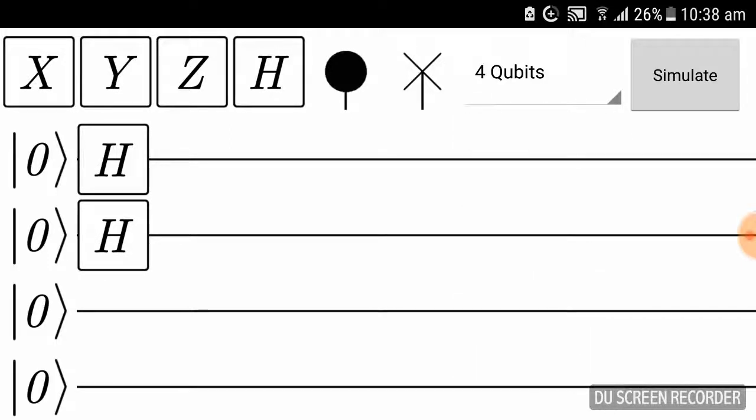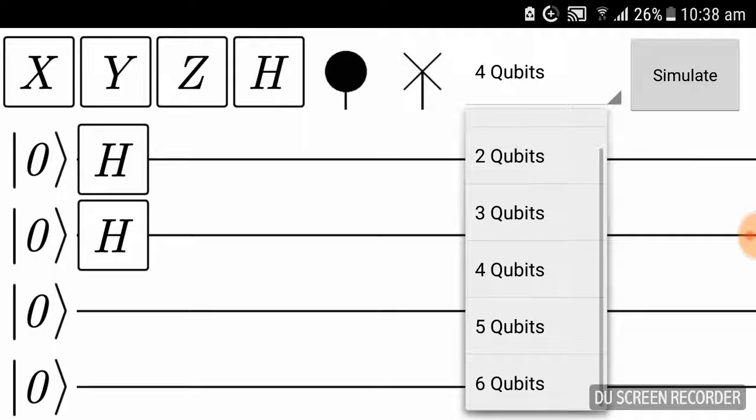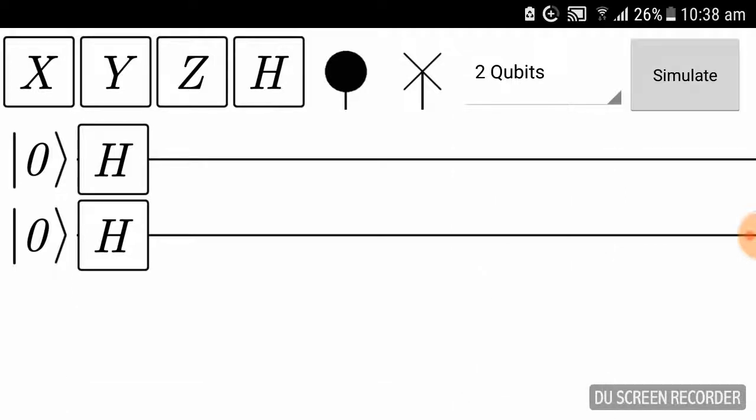If I choose four, two to the power of four is sixteen, so I can search sixteen elements. With these two qubits, I'm going to search from the available four databases.